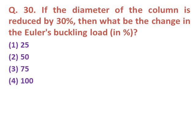Question thirty: If the diameter of a column is reduced by 30%, what will be the change in Euler's buckling load? Euler's buckling load is proportional to D⁴, so using this relationship, the change in Euler's buckling load is 75%.